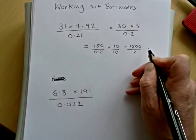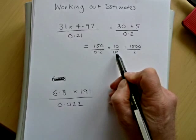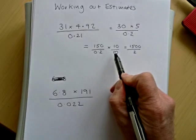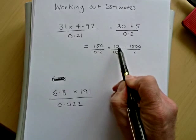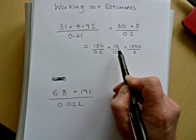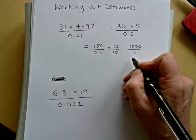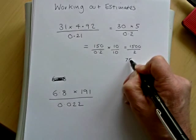And that's much easier now to work with. So if we multiply 0.2 by 10, it becomes 2. We have to multiply the top by 10, so the number stays the same. And we have 1500 over 2, which is 750.